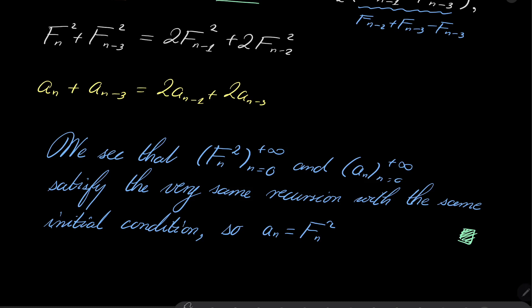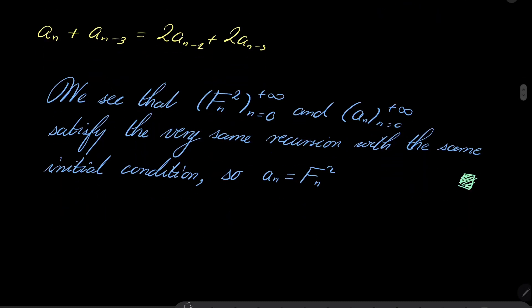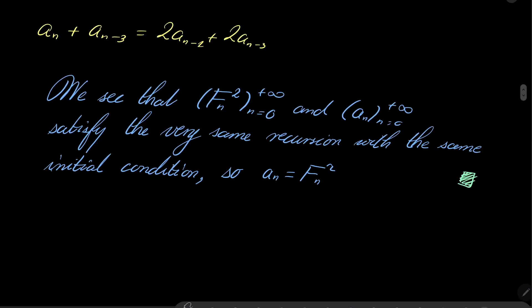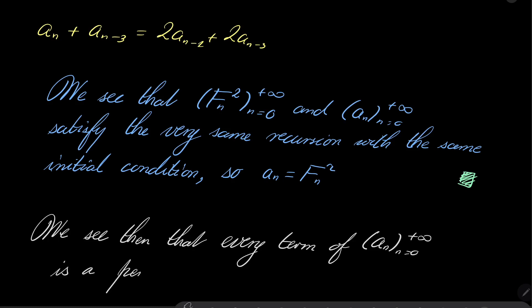So, A_n is a perfect square for every n. Yes, so we see then that every term of sequence A_n is a perfect square, which closes our problem.